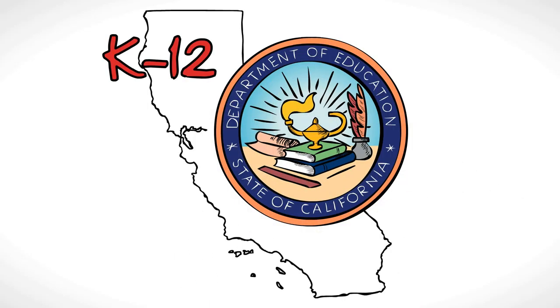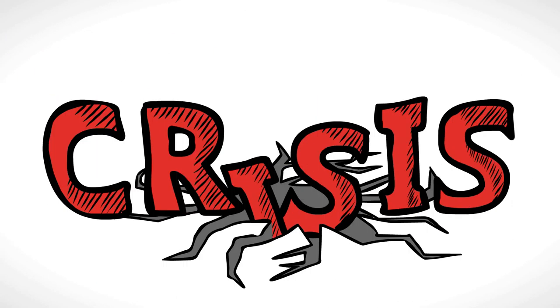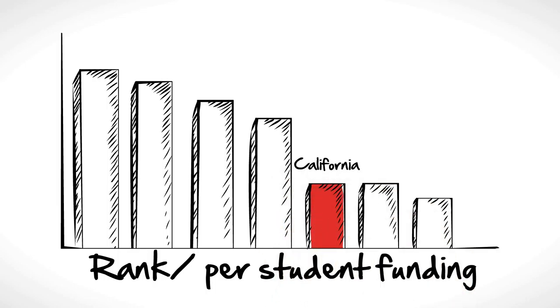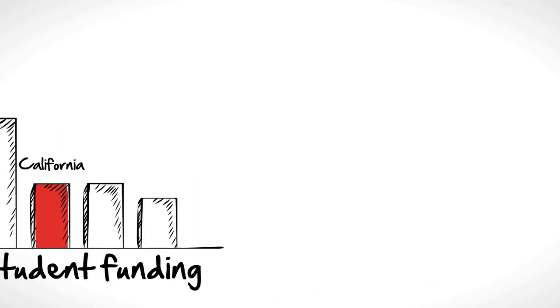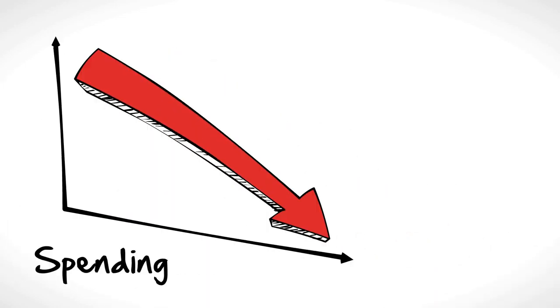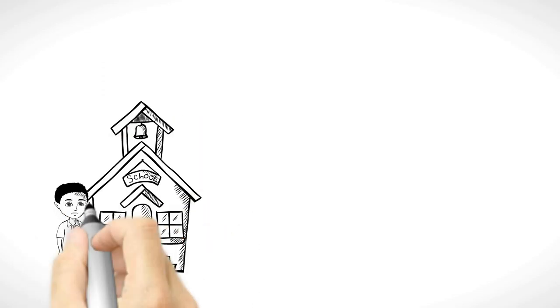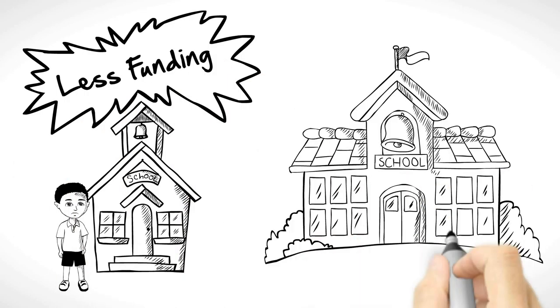K-12 education in California is in crisis. Not only does California rank near the bottom in per-student funding, and spending has been drastically cut, but students in low-income schools receive less funding than kids in well-to-do neighborhoods.